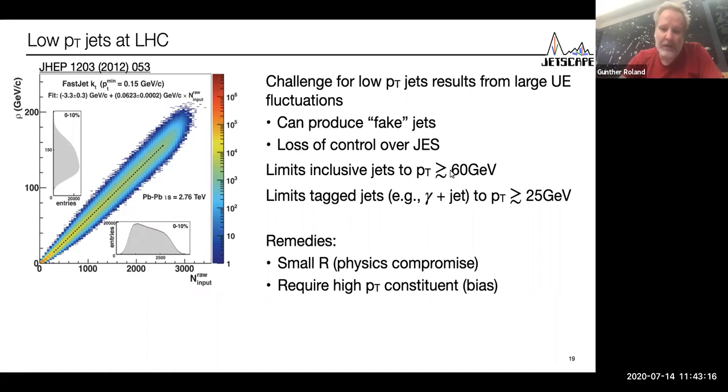There are different ideas of how to deal with this. What I'm particularly interested in are ideas that still give you jet by jet measurements rather than ensemble measurements. You can go to a small radius parameter because then you select less of the underlying event, but that's a physics compromise. Or you can require a high PT constituent which distinguishes a jet from a background fluctuation, but that gives you a bias that you then have to understand.